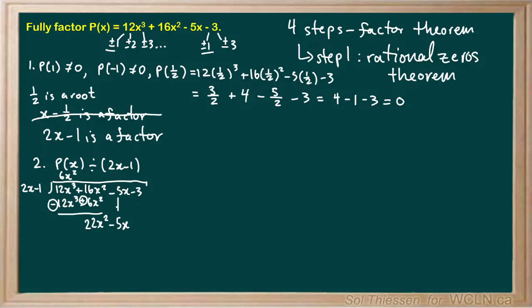We bring down the negative 5x. Now we ask ourselves, what do we multiply 2x by to get 22x squared? The answer is 11x. Then we multiply 11x by 2x minus 1 to leave us with 22x squared minus 11x. Again, we're going to subtract. So we have 22x squared minus 22x squared, which is 0. Then we'll have negative 5x plus 11x, which gives us positive 6x.